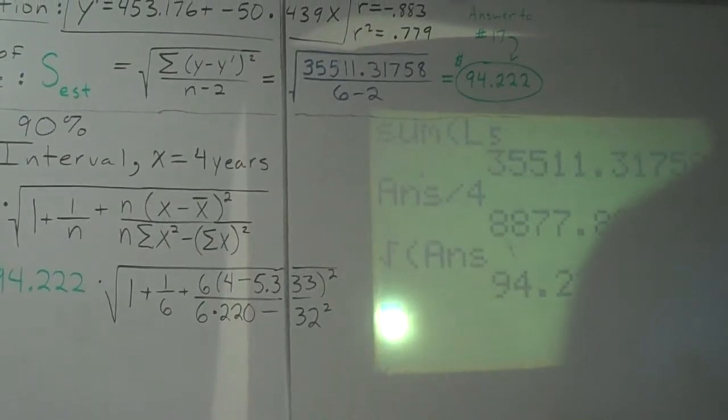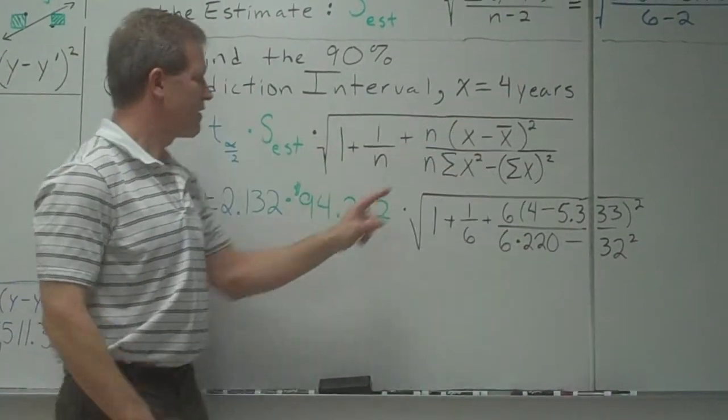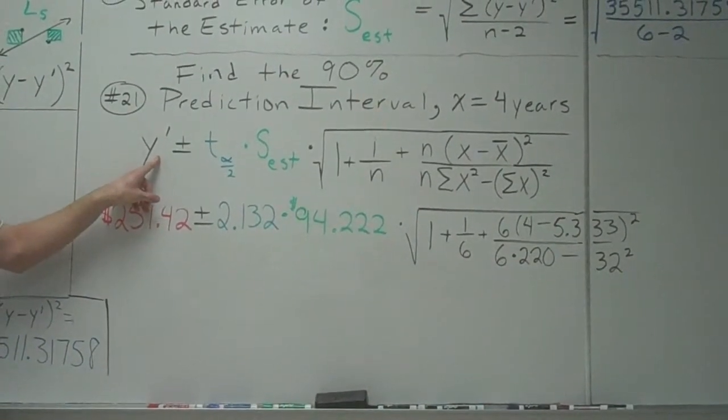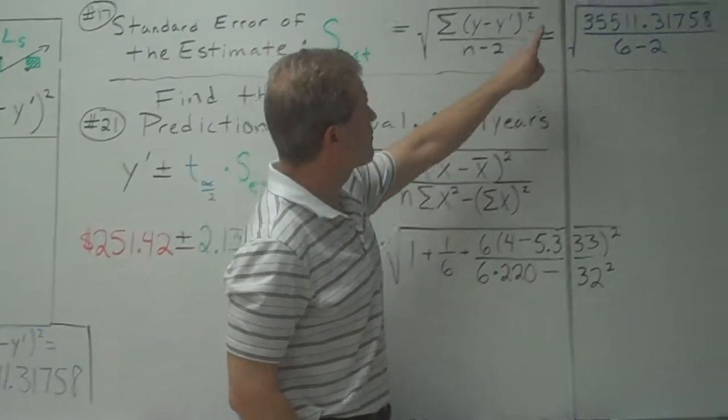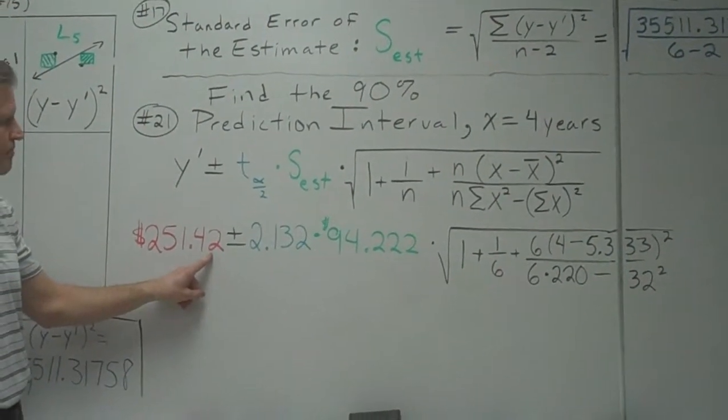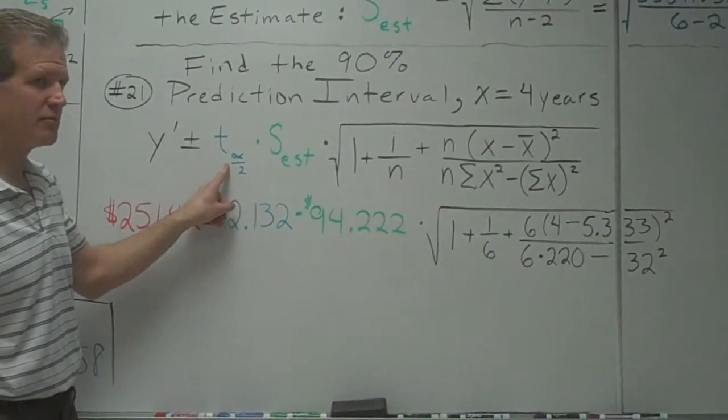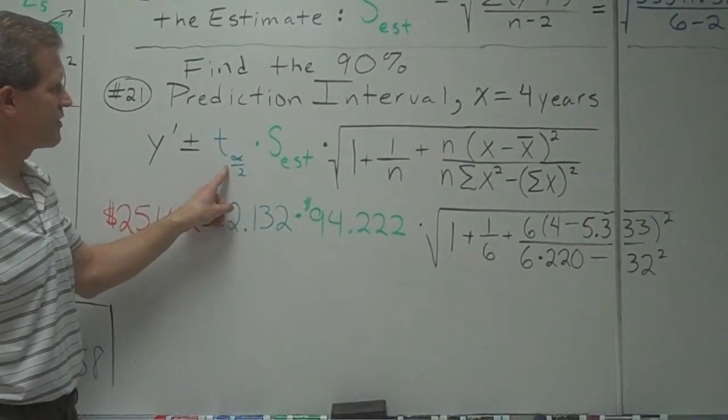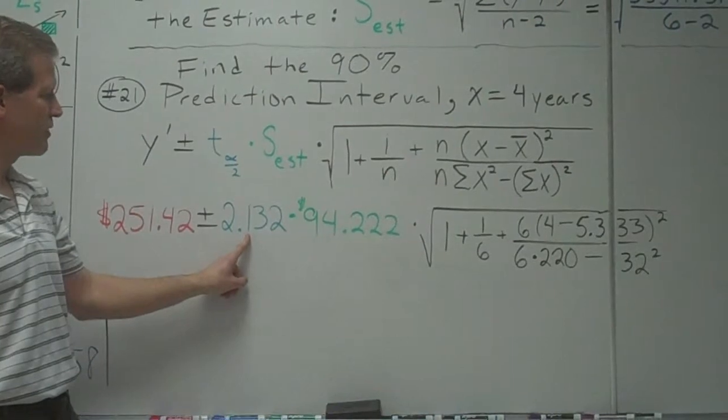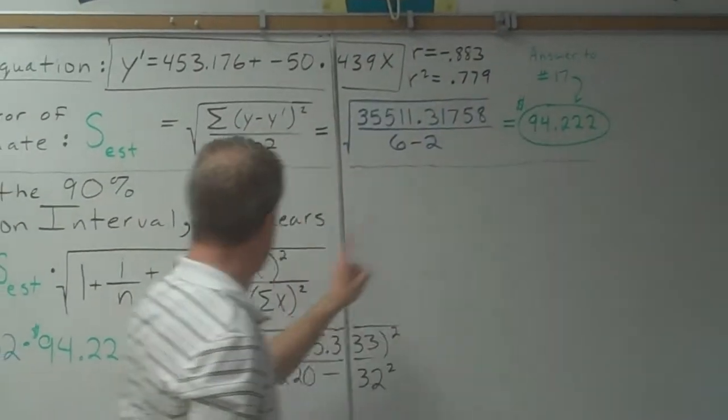Now for 21, it asks you to do a prediction interval. Find the 90% prediction interval when x is 4 years. Okay? Here's the big equation you use for prediction interval. Y prime would be the predicted amount for 4 years. So what you do is you plug 4 in for x in this equation. Calculate that number. It comes out to $251.42. Plus or minus. Now you go to your t-chart. N is 6. Degrees of freedom would be 6 minus 2 or 4. So you'd go on your t-chart. You'd look. Degrees of freedom of 4. You'd look at 90%. You'd look up this number on your t-chart. 2.132.